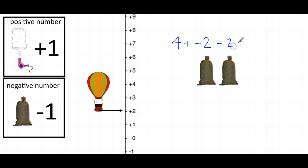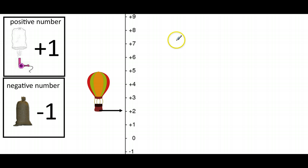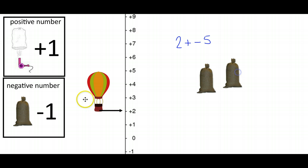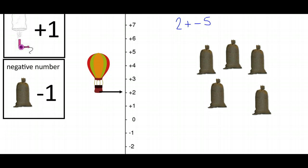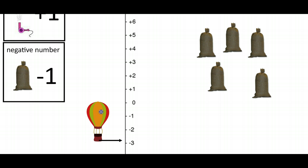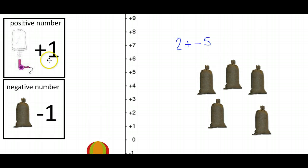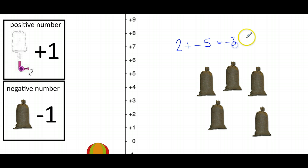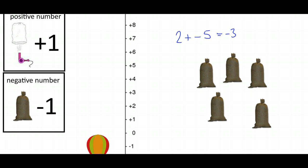My answer is two. Now if I'm on two and I add negative five — 2 + (−5) — I'm adding five sandbags. I was at two and I go down one, two, three, four, five spots. My balloon sinks and I end up at minus three. So 2 + (−5) = −3.